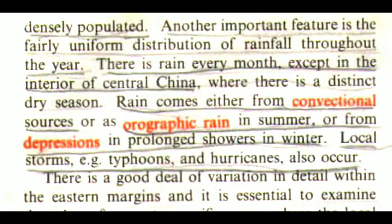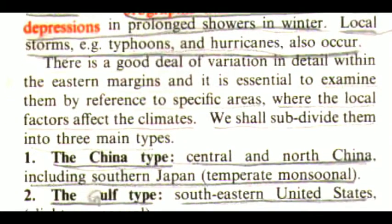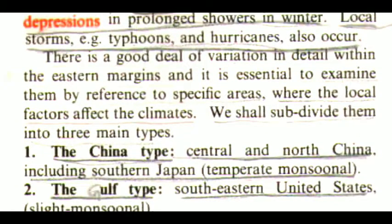Rain comes either from convectional sources or as orographic rain in summer, or from depressions in prolonged showers in winter. Local storms, e.g. typhoons and hurricanes, also occur. There is a good deal of variation in detail within the eastern margins and it is essential to examine them by reference to specific areas where the local factors affect the climates. We shall subdivide them into three main types.